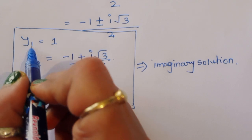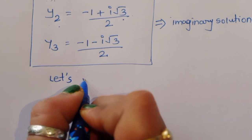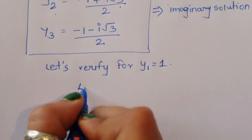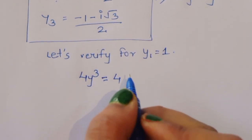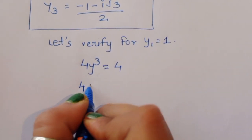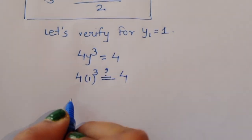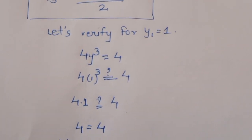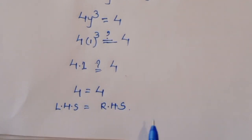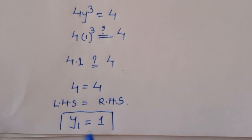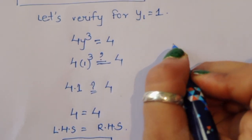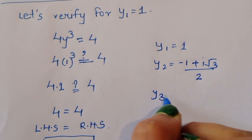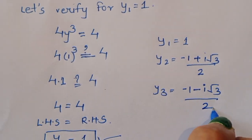We have only one real solution: y1 = 1. Let's verify: substituting y1 = 1 into 4y³ = 4 gives 4 × 1³ = 4 × 1 = 4. Therefore LHS = RHS, confirming y1 = 1 is correct. The three complete solutions are y1 = 1, y2 = (−1 + i√3) / 2, and y3 = (−1 − i√3) / 2.